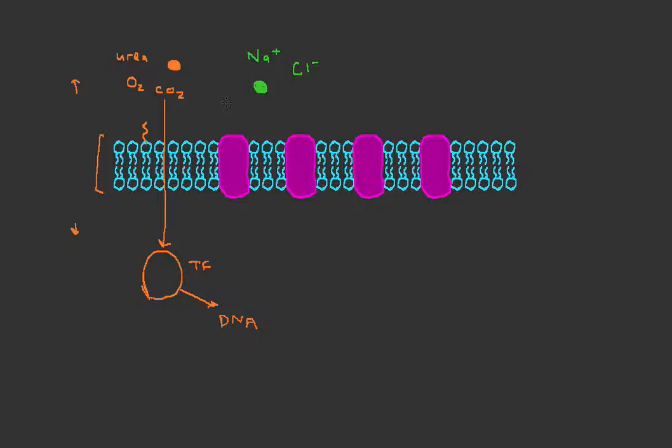So the first one is called an ionotropic receptor. And so this ionotropic receptor works exactly like a ligand-gated ion channel. In fact, that's how you should think of it. Because a ligand will bind to this receptor, and in doing so, the receptor will undergo a conformational change through which ions can pass through inside the cell.